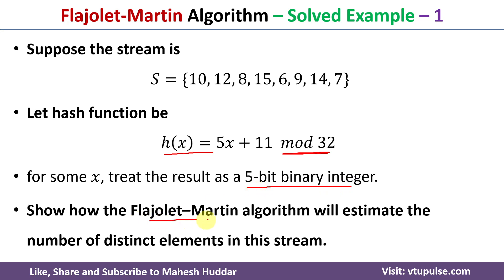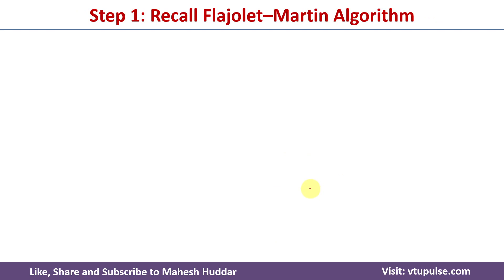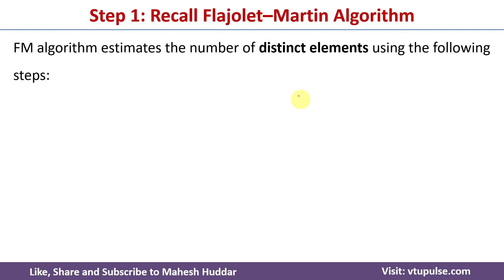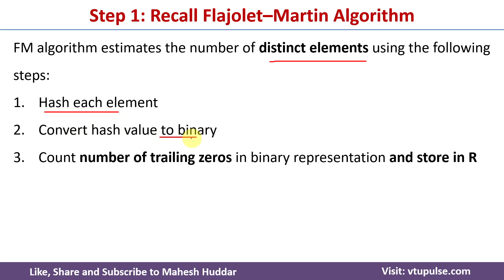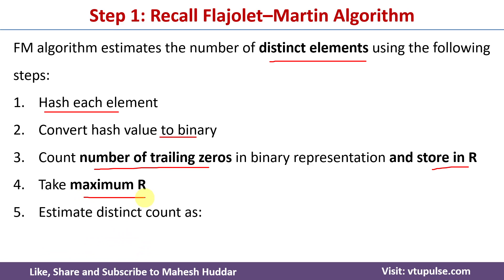Here we will show how the Flajolet-Martin algorithm will estimate the number of distinct elements in this stream. We need to follow some steps: first, apply the hash function to each element; second, convert the hash value to binary; third, count the number of trailing zeros in the binary representation and store that in r. Then take the maximum r, and calculate the distinct count using the formula: estimated distinct elements = 2 raised to r_maximum.